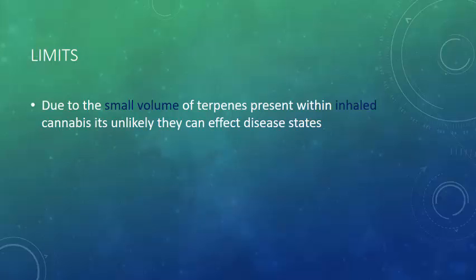Something important: due to the small volume of terpenes present within inhaled cannabis, it's unlikely that they can affect disease states the same way that essential oils would, because you're simply not getting the volume of oils required from inhalation. If your goal is to get enough terpenes, you're going to be inhaling or eating a lot of cannabis — and if you eat it, molecules are going to be destroyed and broken down through the digestive process. Having terpenes absorbed through the skin in concentrated form is a much better method to get them into your bloodstream if your goal is terpene-based therapy.